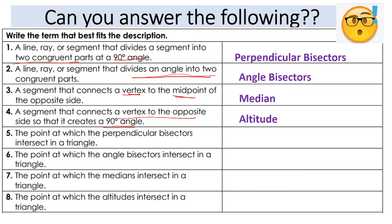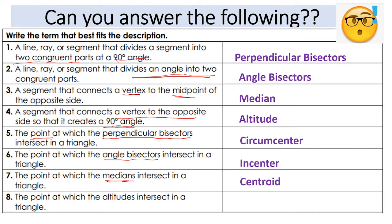The point at which perpendicular bisectors intersect is the circumcenter. The point at which angle bisectors intersect in a triangle is the incenter — the key word is angle bisector. The point at which medians intersect is the centroid. And the point at which altitudes intersect is the orthocenter.